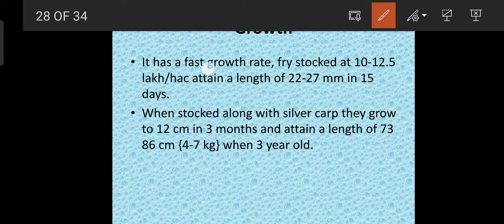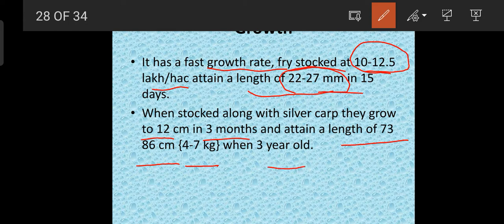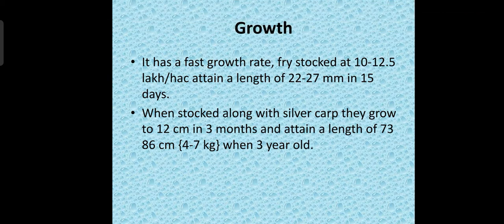Regarding growth rate: it has a fast growth rate. Fry stocked at 10 to 12.5 lakh per hectare grow to 22 to 27 mm in 15 days. When stocked along with silver carp, it grows to 12 cm in 3 months, and attains a length of 73 to 86 cm, meaning 4 to 7 kg, by the 3rd year — so in 3 years it grows to 4 to 7 kg.